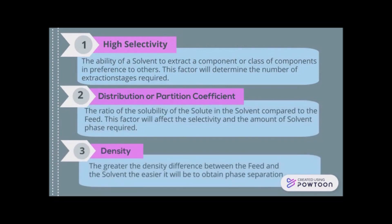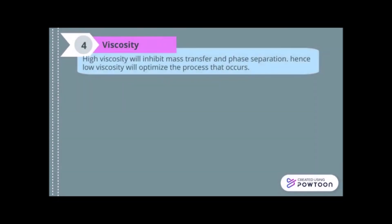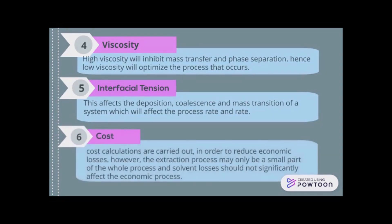Other factors include density: the greater the density difference between the feed and the solvent, the easier it is to obtain separation. Next is viscosity: high viscosity will inhibit mass transfer and dispersion, so low viscosity optimizes the process. Then there is interfacial tension, which affects the dispersion, coalescence, and emulsification of the system and will affect the process rate. Last but not least is cost: cost calculations are carried out to reduce economic losses, though solvent losses should not significantly affect the overall economics.